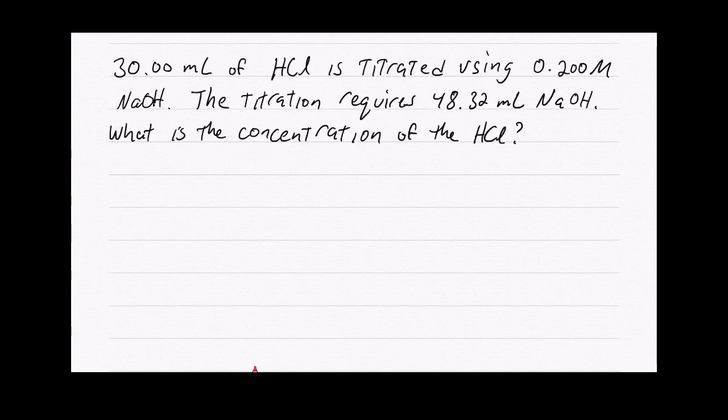Here's a titration problem we can do. We've got 30 milliliters of hydrochloric acid HCl and it's being titrated with 0.2 molar NaOH. So we're adding NaOH to the HCl and it took 48.32 milliliters of the NaOH. We want to know what the concentration of HCl is for that solution.